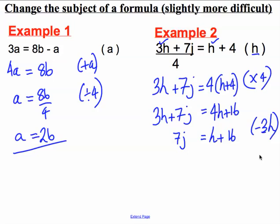We're nearly there. h plus 16 is equal to 7j. I want h on its own. So I subtract 16 from both sides and I get h is equal to 7j subtract 16. h is on its own on one side of the equal sign and so is the subject of this formula.